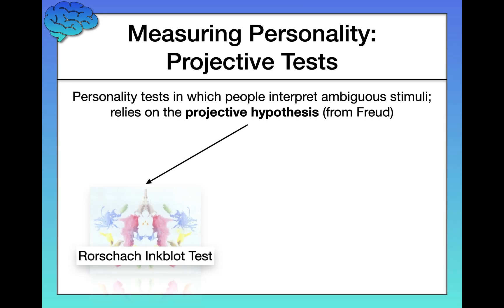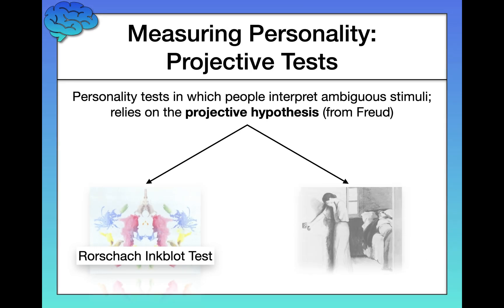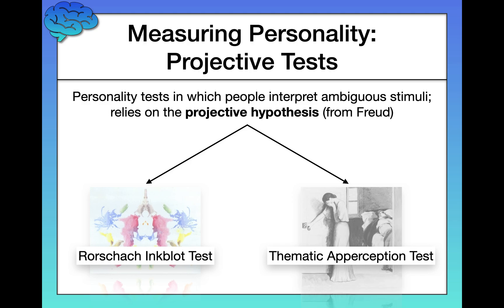A second type of projective test is called the TAT — the thematic apperception test. I like to call it the 'tell a tale' test because telling a tale is exactly what people have to do. You're presented with a series of pictures and you have to create a story or narrative about what is going on in each.